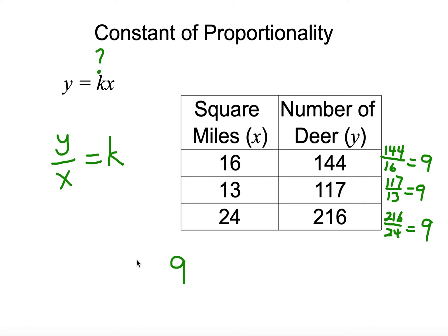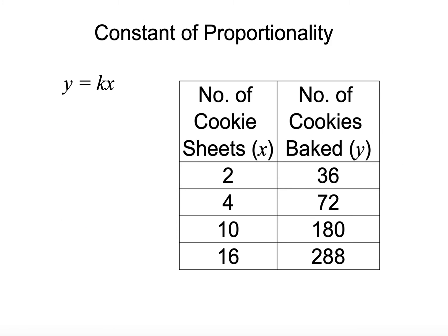So our answer would be 9. So to put this in the original formula, we could say y equals 9x. Because the square miles times 9 is going to equal the number of deer.